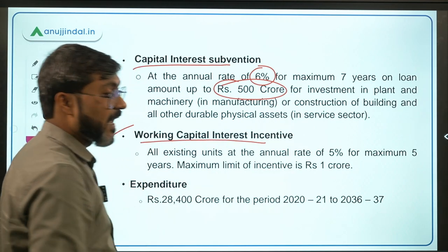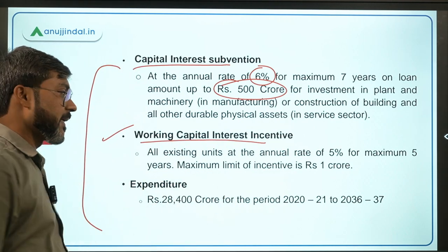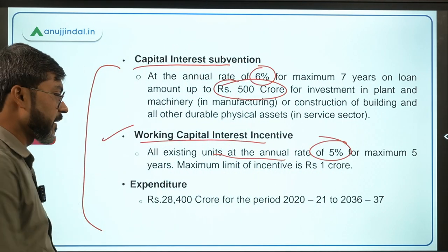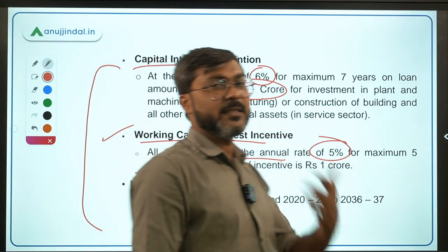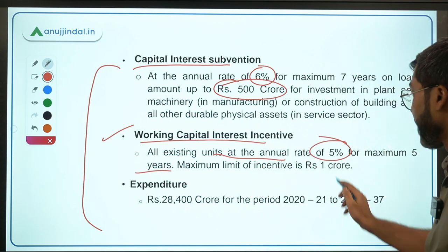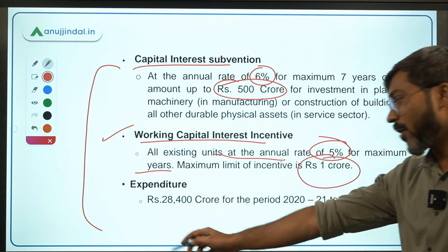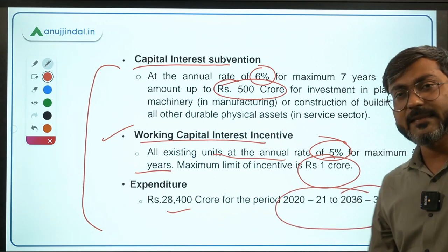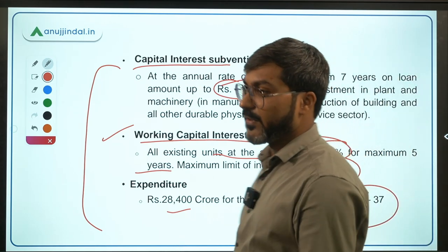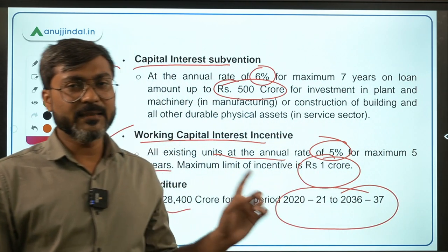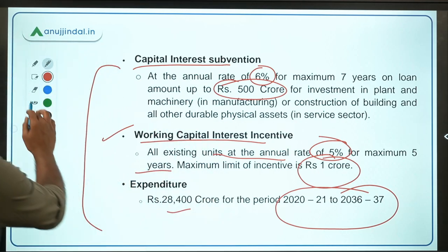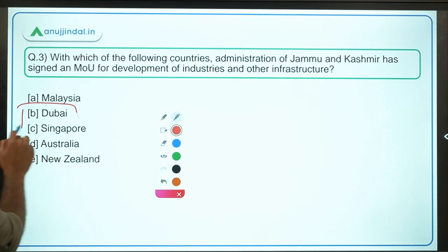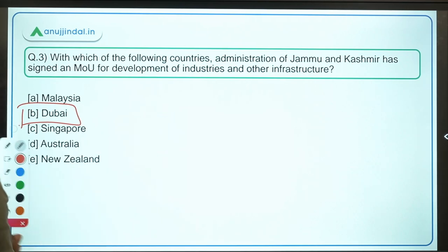Working capital interest incentive is also provided to all existing units at an annual rate of 5% for a maximum period of 5 years, with a maximum incentive of Rs. 1 crore under this component. The total outlay of the scheme is Rs. 28,400 crore and the scheme is intended to achieve its objectives by the financial year 2037. Coming back to the question, the MOU has been signed with Dubai, so Option B is the correct answer.